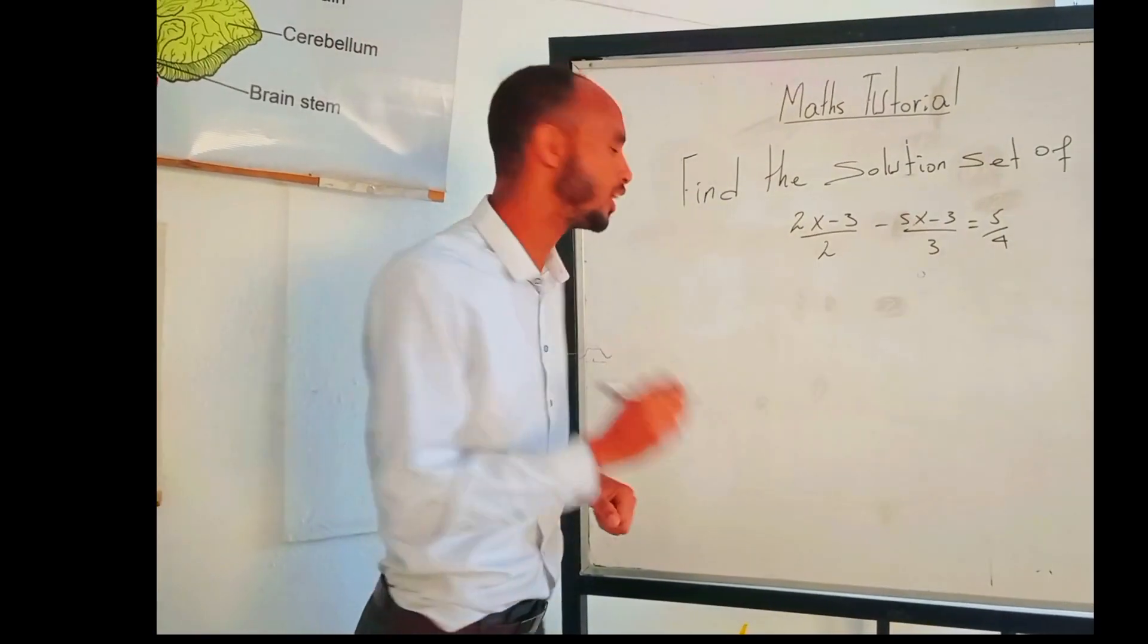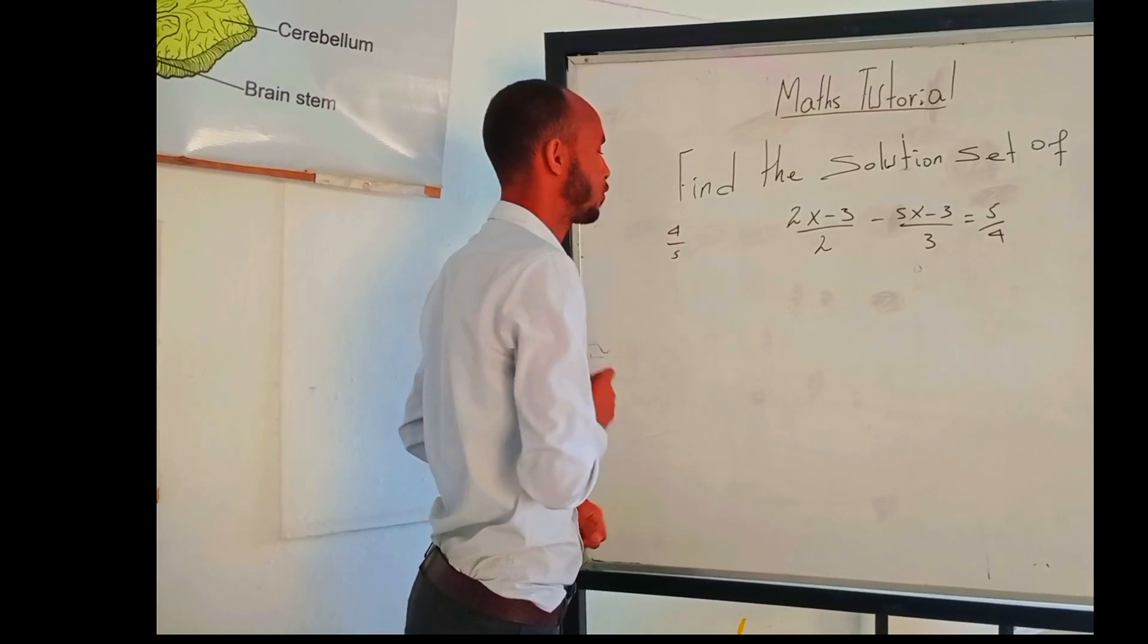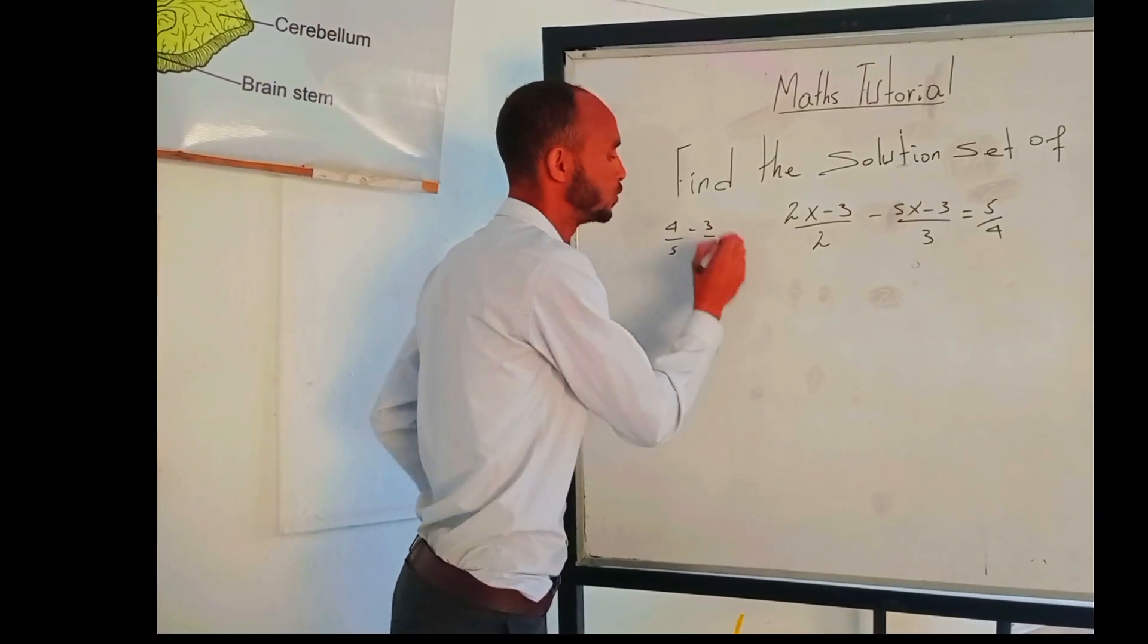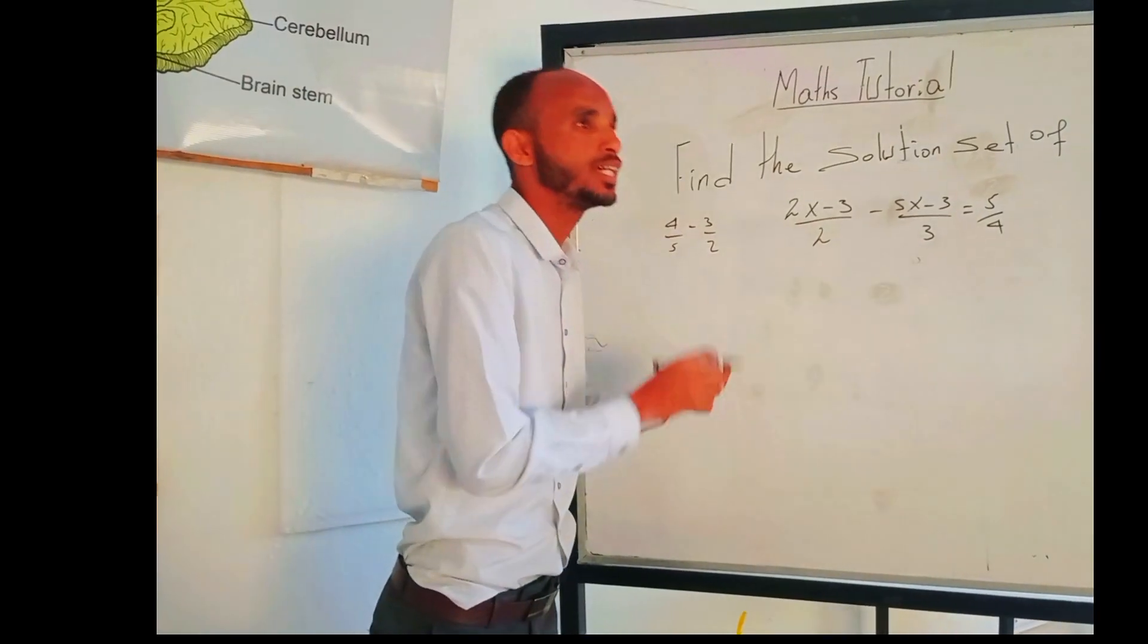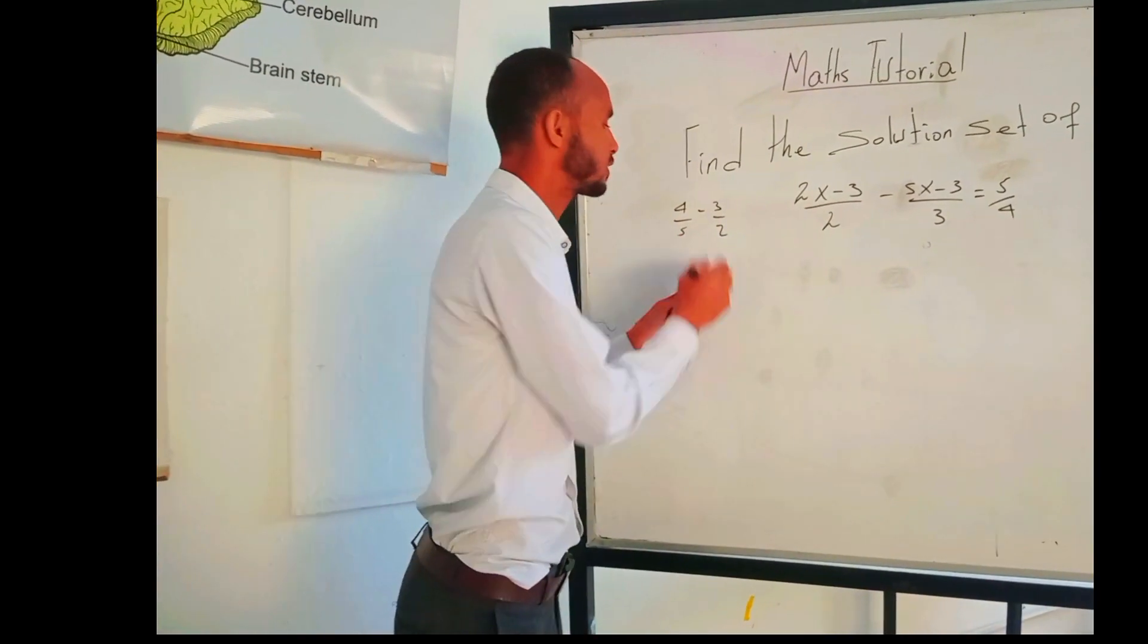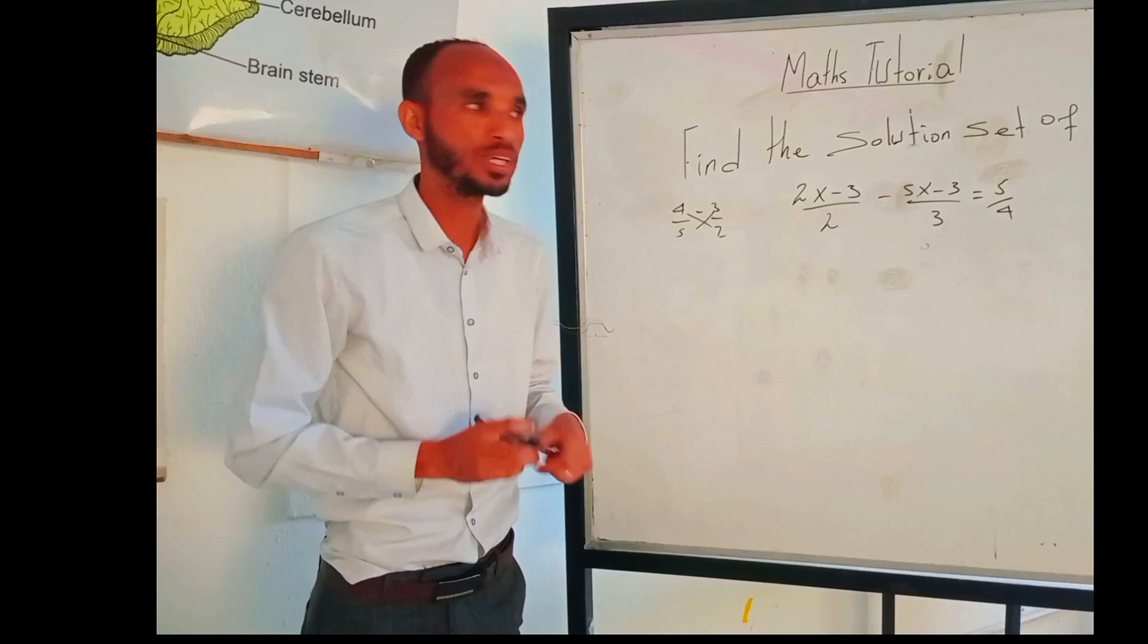The instant point is giving one example like 4/5 - 3/2. How to compute this fraction? You have to apply different techniques. For instance, maybe the first technique is using cross-product method.